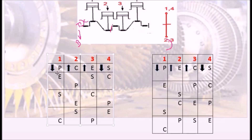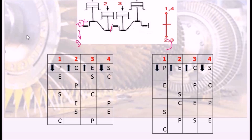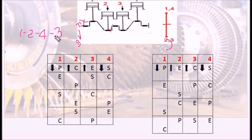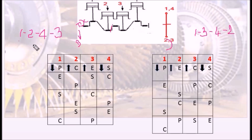For the first choice of firing order, looking at which cylinder delivers the power stroke first: the firing order is 1 - 2 - 4 - 3. Alternatively, the second possible firing order for this crank configuration is 1 - 3 - 4 - 2. Both are valid for a four-cylinder inline engine with cylinders 1 & 4 and 2 & 3 paired.